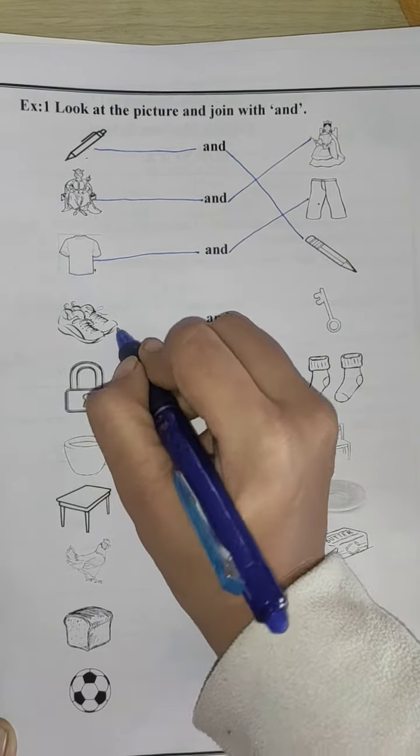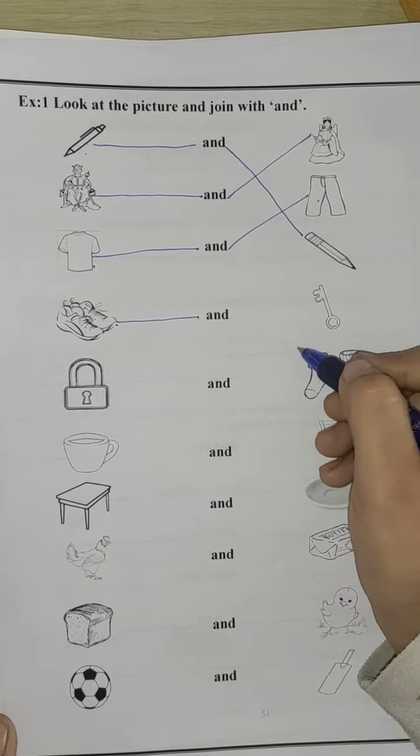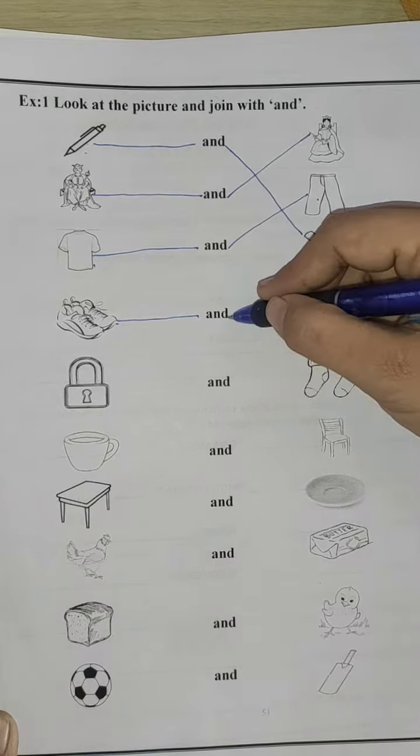Next is shoes. Shoes and, shoes and key? No, shoes and socks. Yes, shoes and socks.